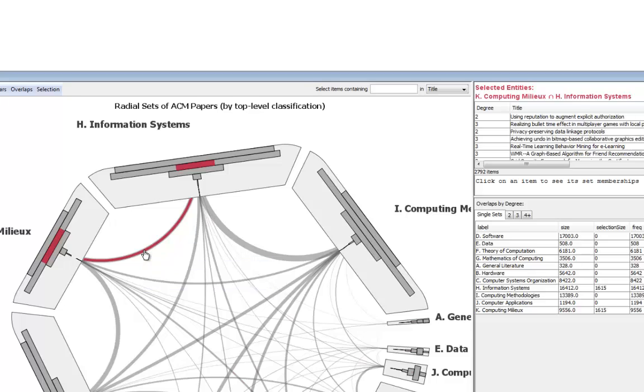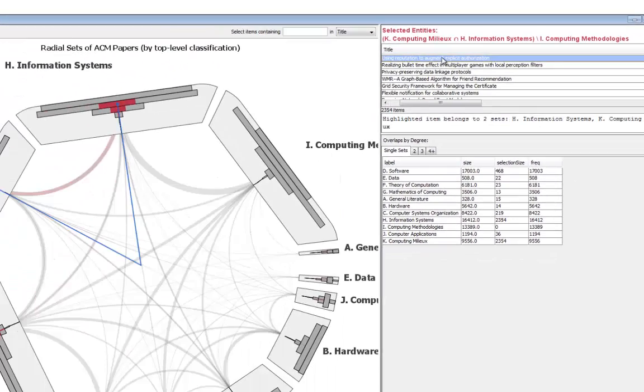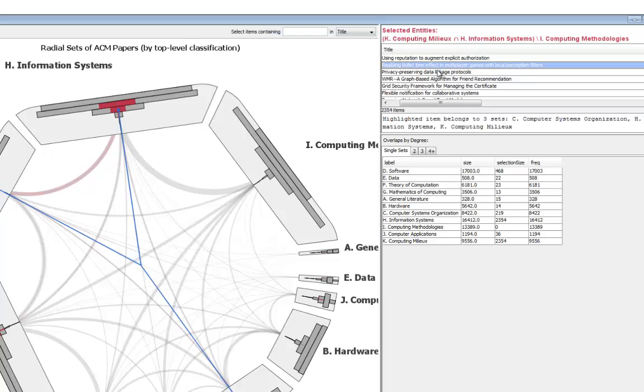Besides intersection, these modifiers allow defining other set operations such as set subtraction. These selected elements can be explored in detail in the selection list with arrows depicting their set memberships on demand.